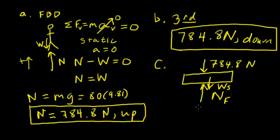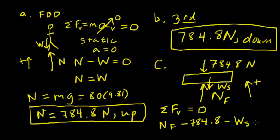But the equation we're going to use to solve for the normal force is the same. The equation we're going to use is that the sum of all the vertical forces must equal zero, because the scale is static. So again, I'll choose the convention that up is positive. So I wind up with NF minus 784.8 minus the weight of the scale is going to equal zero.